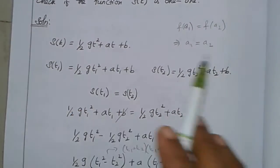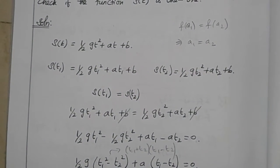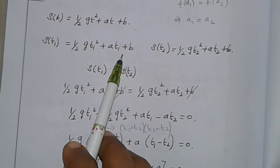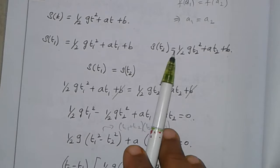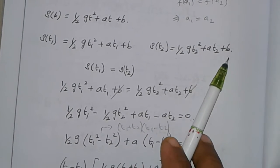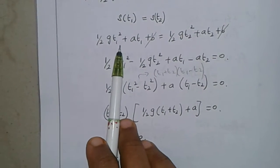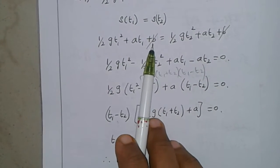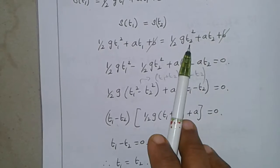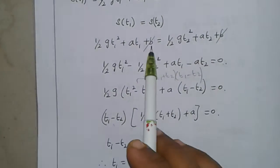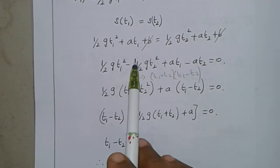For the function s(t), we set up s(t₁) and s(t₂). If s(t₁) is equal to s(t₂), then (1/2)gt₁² + at₁ + b equals (1/2)gt₂² + at₂ + b. The b terms cancel out.